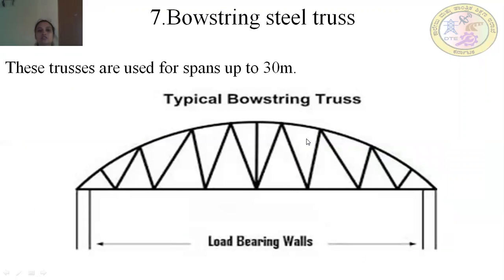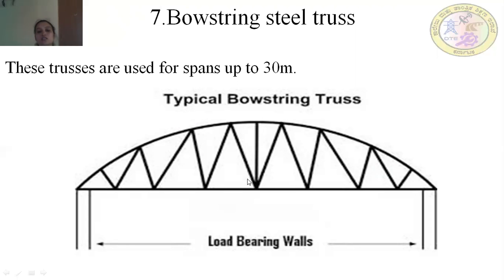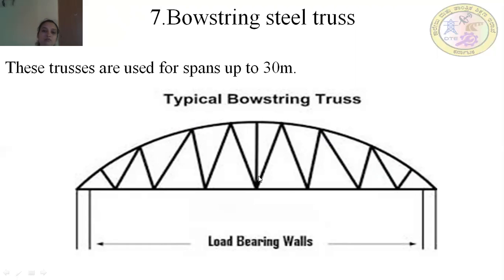Bow string steel trusses are used for spans up to 30 meters. The shape looks like a bow, which is why it is called the bow string truss. It features a curved roof, a horizontal tie member, vertical members, and inclined members called struts.